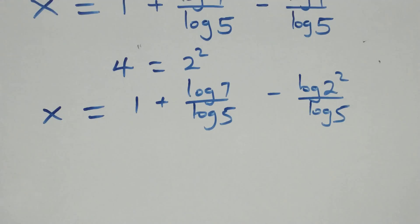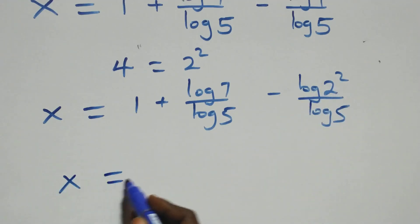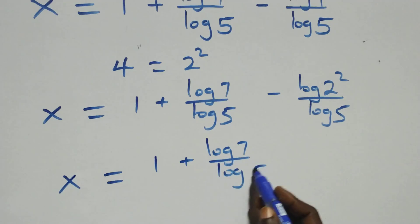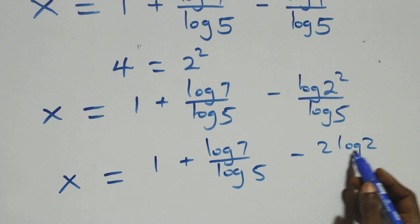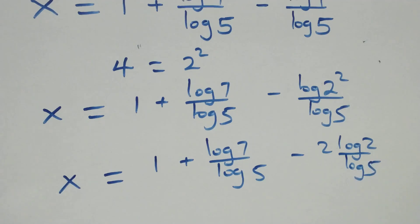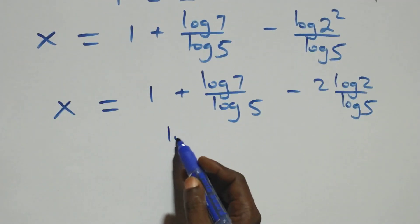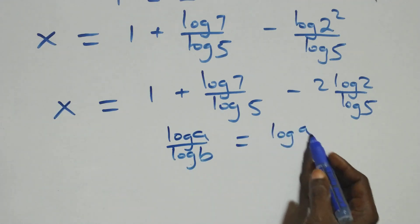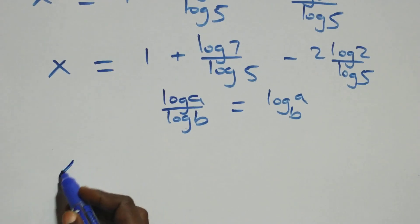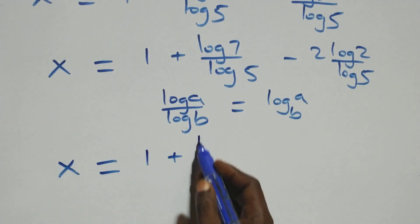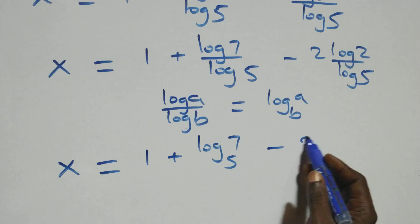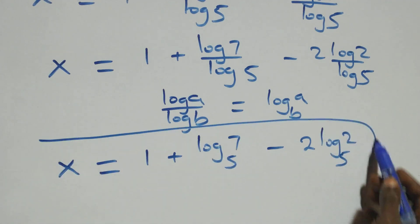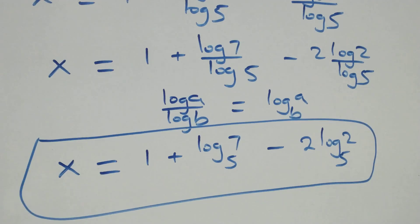Here we apply the power rule of logarithms: log 4 over log 5 becomes 2 log 2 over log 5. Then we apply the change of base rule: when we have log a over log b, this is the same thing as log a to base b. So all here becomes x equals to 1 plus log 7 base 5 minus 2 log 2 base 5. The value of x is 1 plus log 7 base 5 minus 2 log 2 base 5.